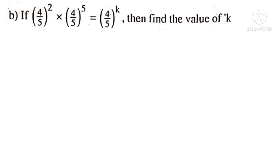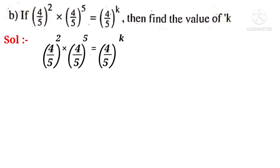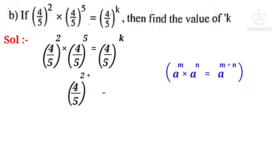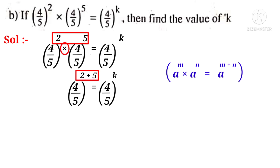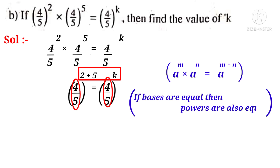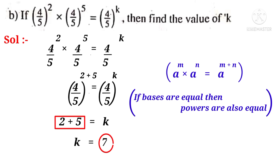Question 14c: If (4/5) squared × (4/5) power 5 equals (4/5) power k, find k. Using A power M × A power N = A power M plus N: (4/5) power (2 + 5) = (4/5) power k. Since bases are equal, the exponents are equal: k = 2 + 5 = 7.